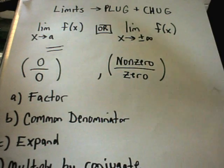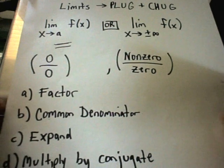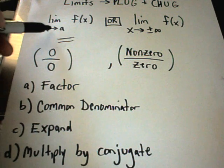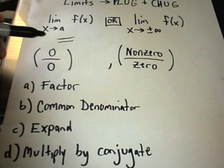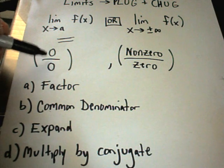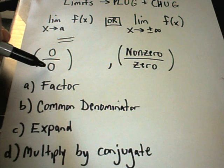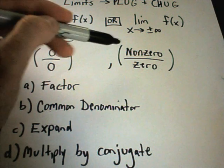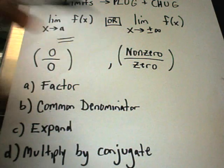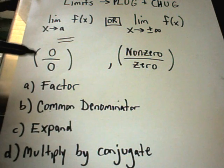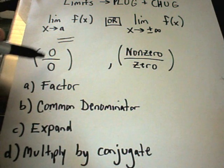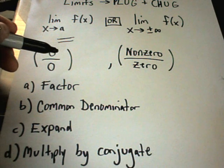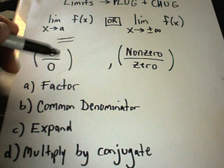Typically, most limit problems don't work out as easy as this though. Typically when you plug in x equals the number into your function, you'll usually either get something of the form 0 on top and 0 on the bottom—this is definitely not 1—or you get something non-0 over 0. We're going to work on some of the cases where you have 0 over 0. And again, these aren't hard and fast rules, but they are general rules.